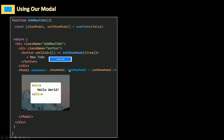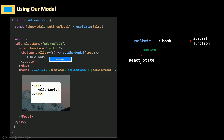The showModal and setShowModal are created using useState, which is a hook in React. useState returns an array where the first variable is set equal to the initial value — false — and the next one is a function. That function is the only way to change the showModal value. A hook is just a special function that hooks you into React features. In this case, the React feature we want is React state, where we store property values that belong to the component. When I create showModal, this state belongs to AddNewTodo.